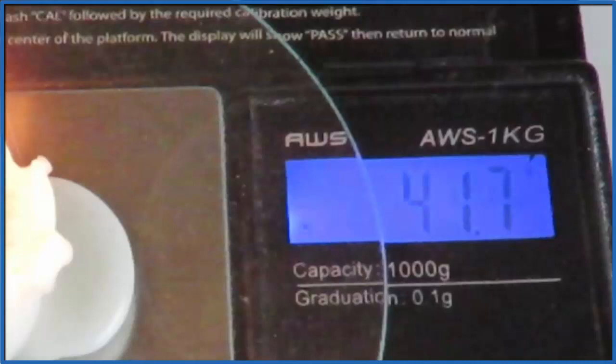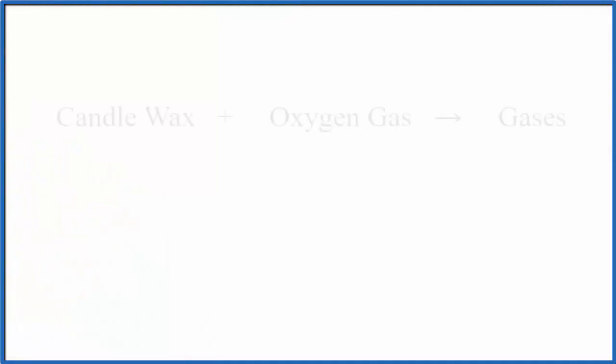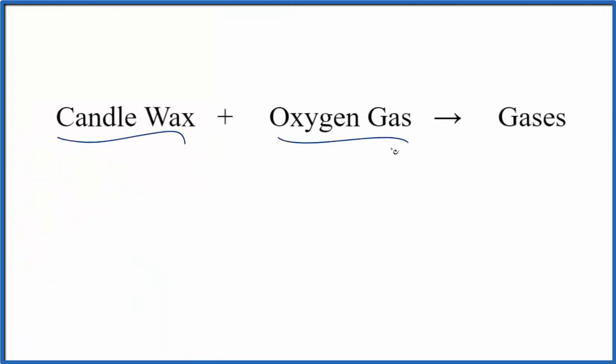So let's take a look at the chemical equation here for how this happened. What are those gases? At this point we know we started with candle wax, we had oxygen gas in the air, and the mass went somewhere. We're expecting that to be those invisible gases. We know that candles are made of carbon and hydrogen.